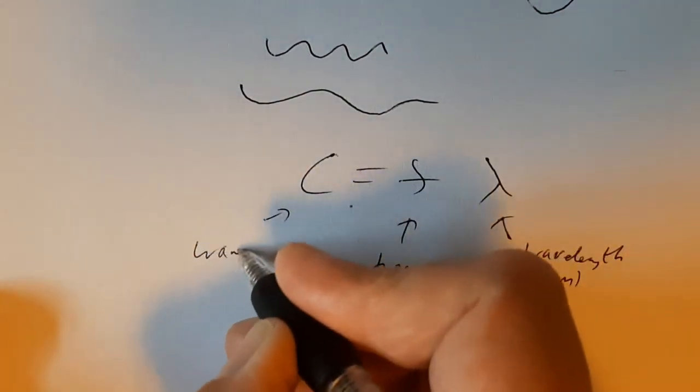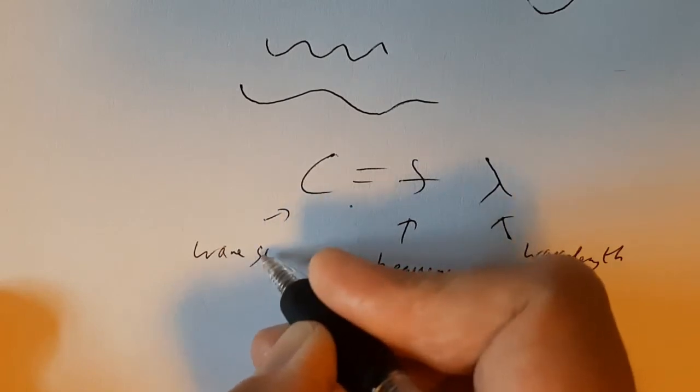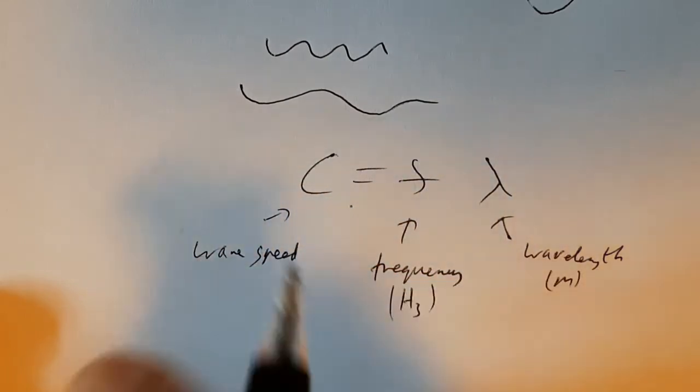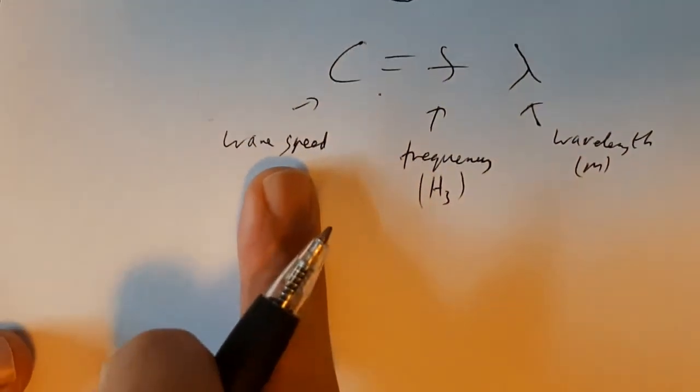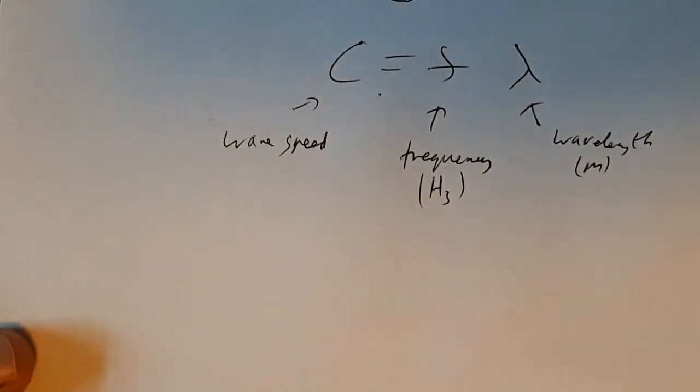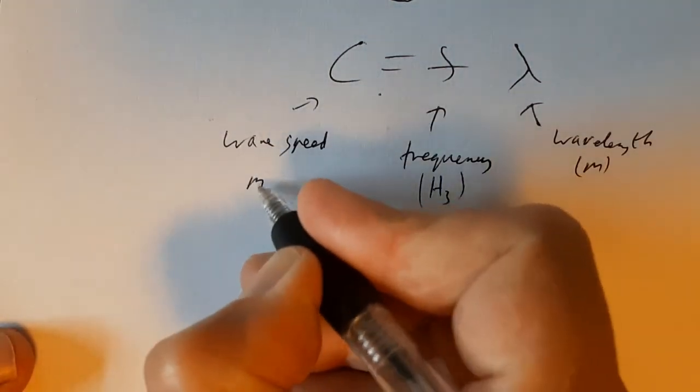And this is the wave speed. Basically, we want to not use V or S for speed or velocity here. So we use C for wave speed, and that's in meters per second.